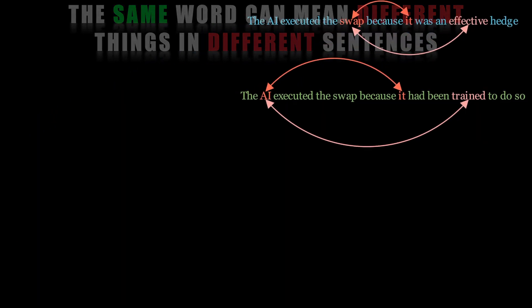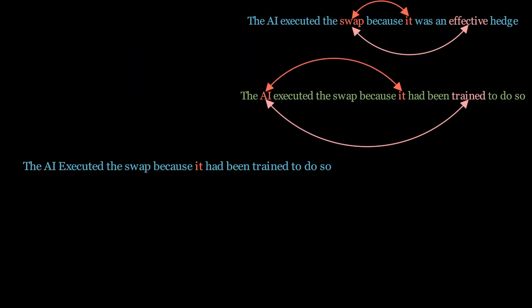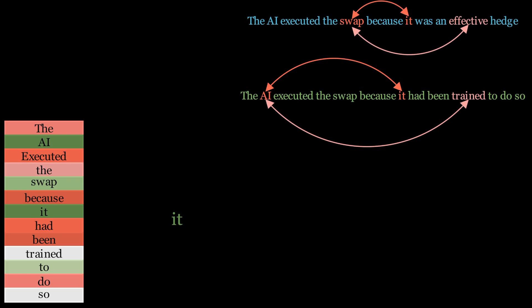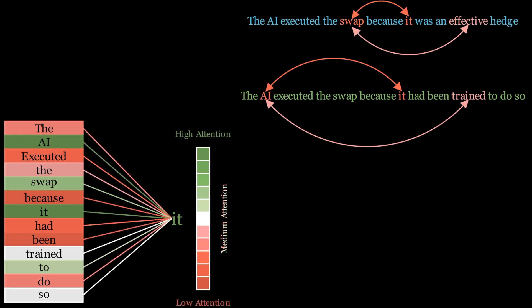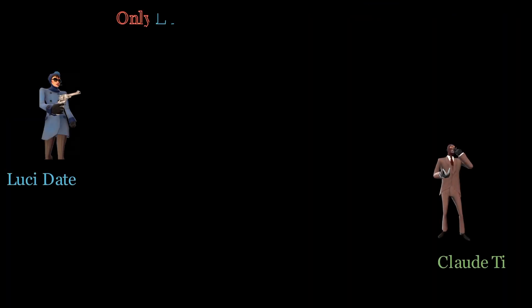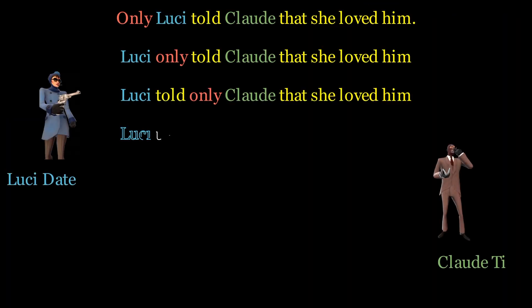It enables the model to understand the complex relationships between different words in a sequence and helps it produce more accurate and meaningful outputs. The attention mechanism in transformers relies on the positional embedding of the input sequence to determine words' relative positions.